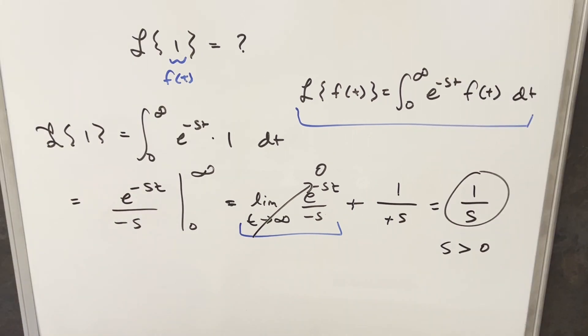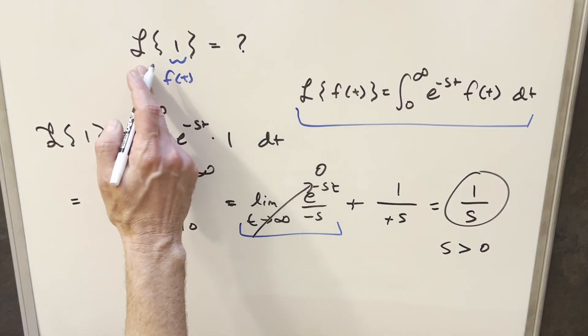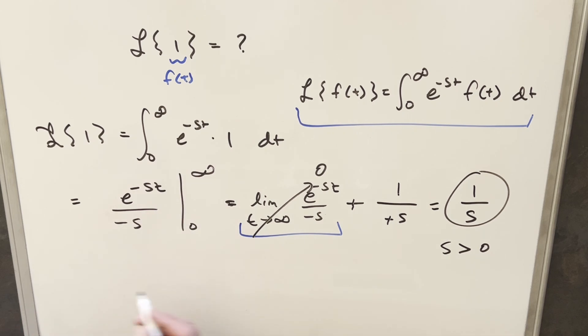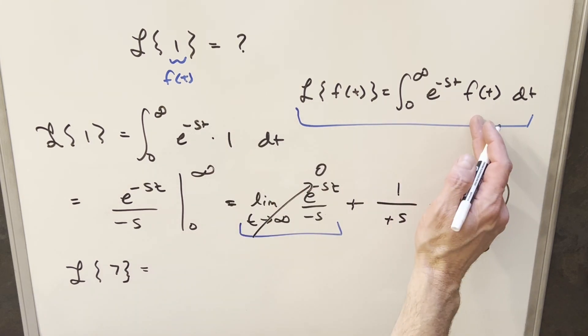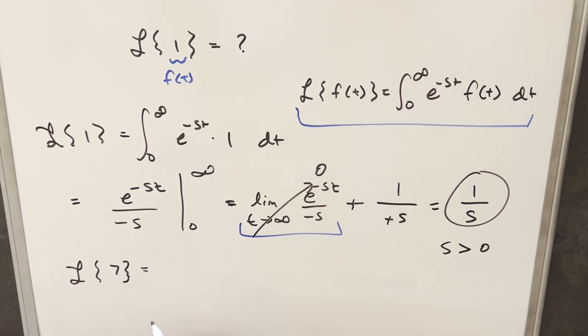Now, before I finish this up, just one other example I want to look at is we did the Laplace of one. What if it was some other number? Like, let's say we were asked to find the Laplace of seven. Well, of course, we could do the same exact thing and plug it in. But notice if we plug in a seven, we could just bring it out front of the integral.